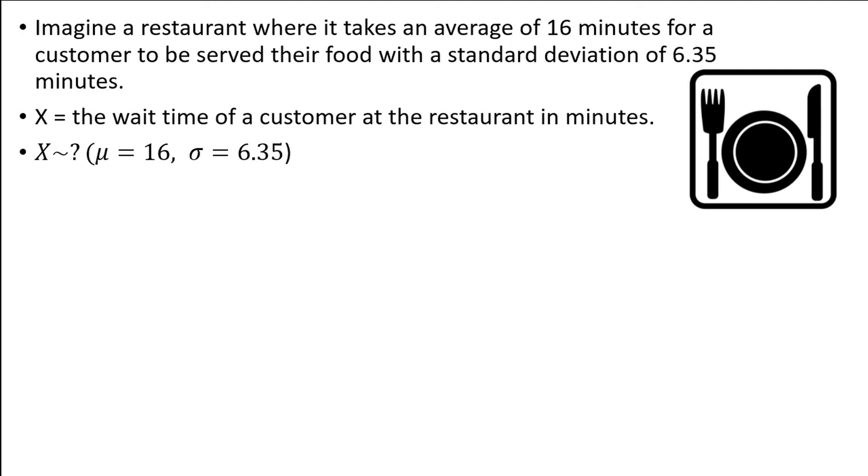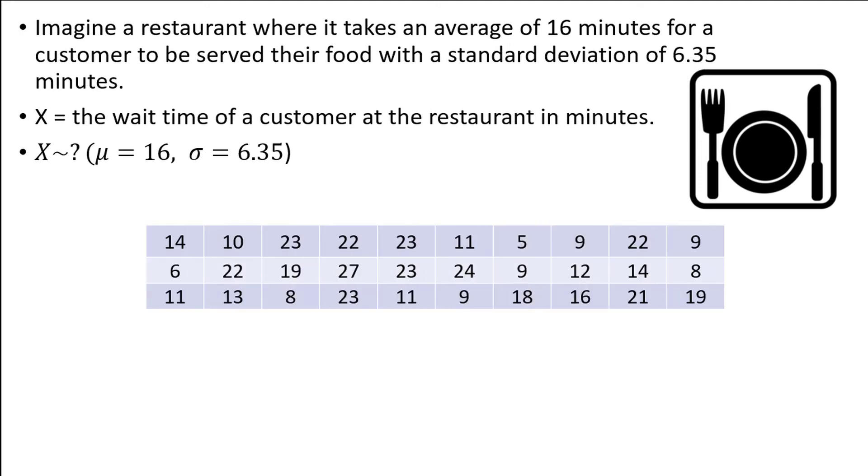Let's say we take a sample of size 30 from this distribution and calculate the mean. Here are the 30 observations. Time waited is a continuous variable, so we could have decimal values, but the observations have been rounded to the nearest whole number for convenience. The mean of these 30 wait times is about 15.37 minutes.